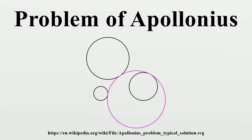The method of van Riemann was simplified by Isaac Newton, who showed that Apollonius' problem is equivalent to finding a position from the differences of its distances to three known points. This has applications in navigation and positioning systems such as LORAN.